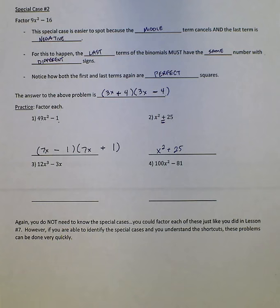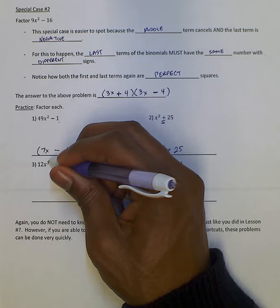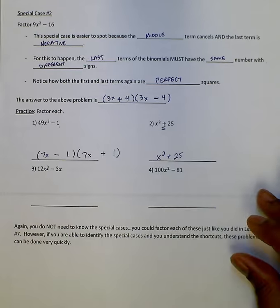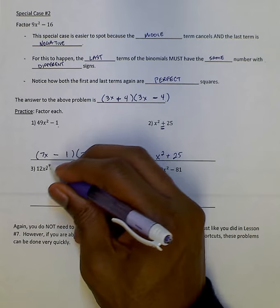And then the final one that we're going to do together here, we have 12x cubed minus 3x. This x cubed, like I said before, is a hint to us that maybe we can factor some GCFs out. And here we can see that there's a GCF between the two, 12 and 3.